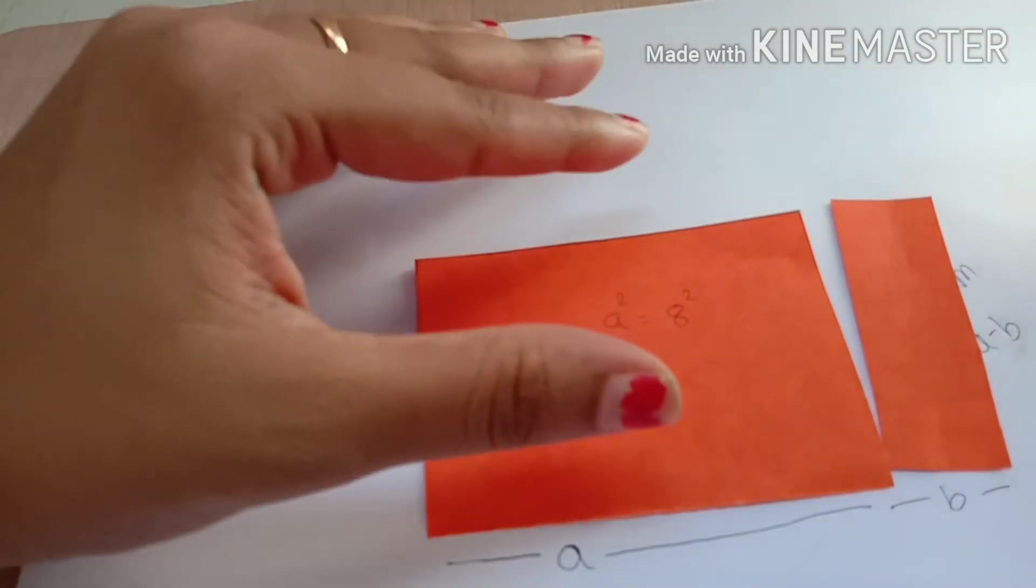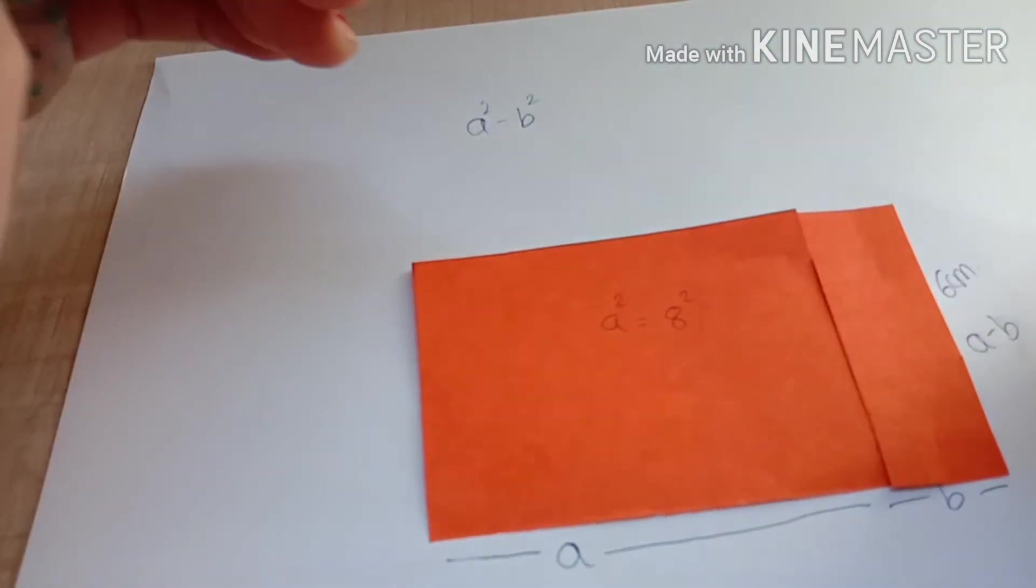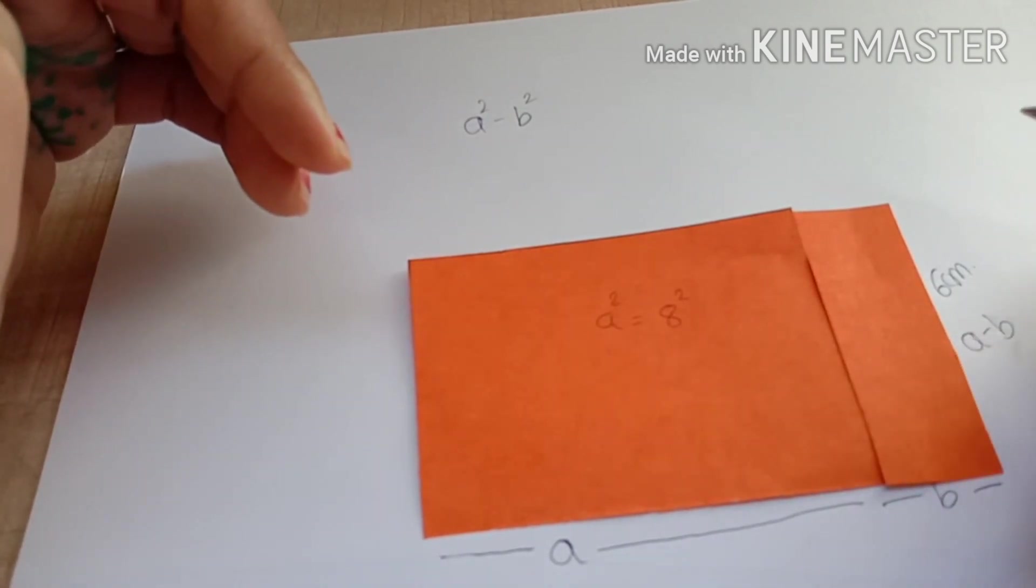I cut that rectangle and placed it to form a bigger rectangle. Now what I got is a plus b into a minus b.